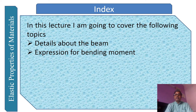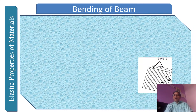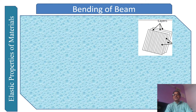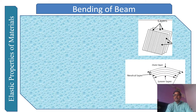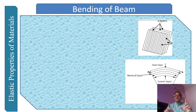Let us suppose these are parallel filaments placed one over the others, which constitute a beam. This beam has been made by different filaments arranged in a parallel way. You can imagine a meter scale which you use in the physics lab — it is made up of such parallel layers.